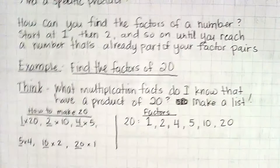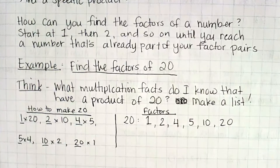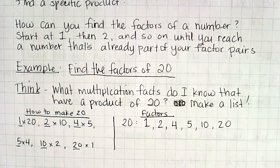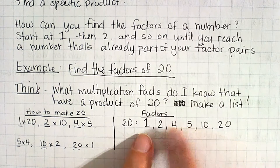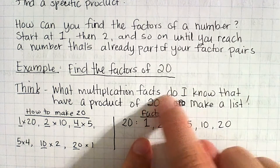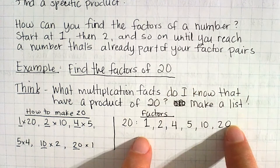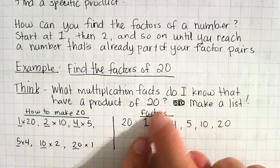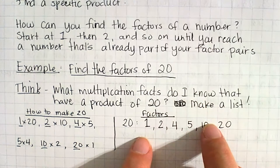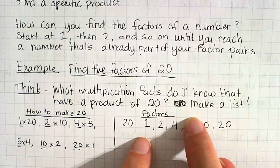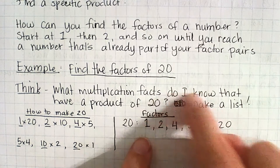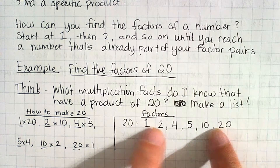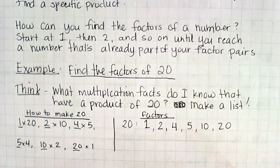This arrangement is called rainbow factors. The 1 times 20 gives you 20, 2 times 10 gives you 20, and 4 times 5 gives you 20. You're pairing them from the outside and moving in.